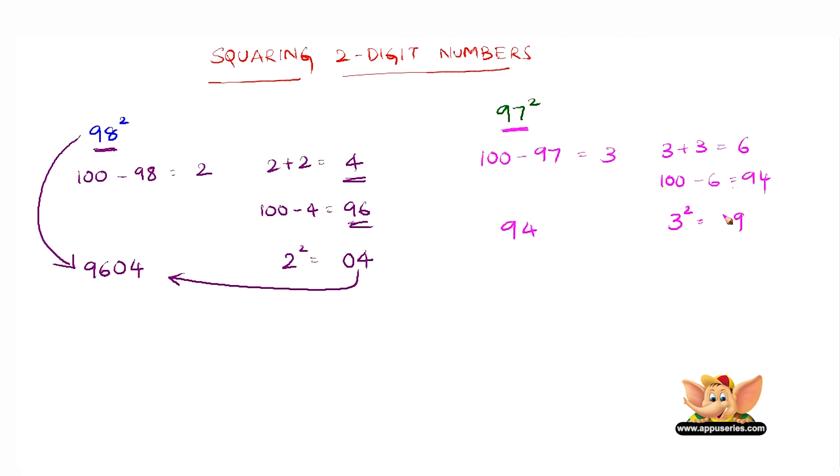Since 9 is less than 10, place 0 to the left of 9 and join this to 94. So 9409 is the answer of 97 the whole square.